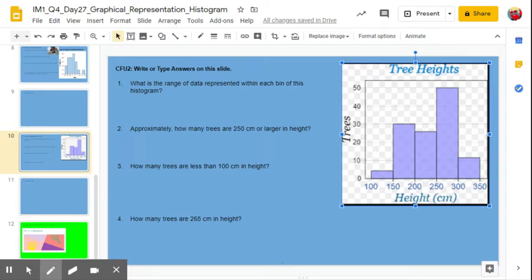what's the range of the data represented within each bin of this histogram? Well, it goes from 100 to 149, 150 to 199, 200 to 249, 250 to 299, 300 to 349. So those are bins of 50. It's a range of 50 per bin.